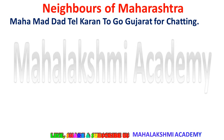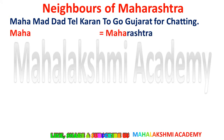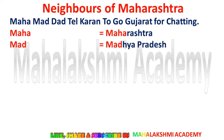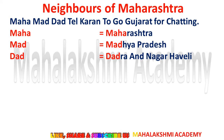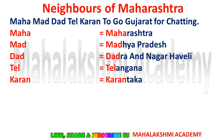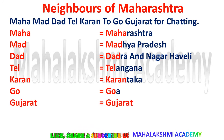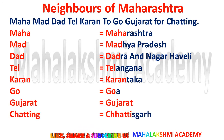This is the trick which will help you learn the neighbors of Maharashtra. Maha is for Maharashtra, Mad is for Madhya Pradesh, Dad is for Dadar and Nagar Haveli (a union territory), Tel is for Telangana, Karan is for Karnataka, Go is for Goa, Gujarat is for Gujarat, and Chatting is for Chhattisgarh. These are the regions touching Maharashtra.